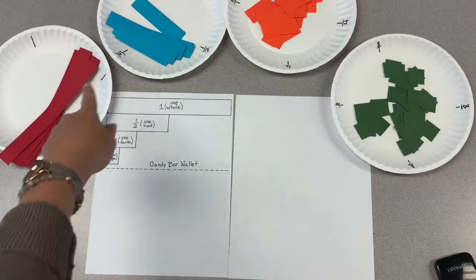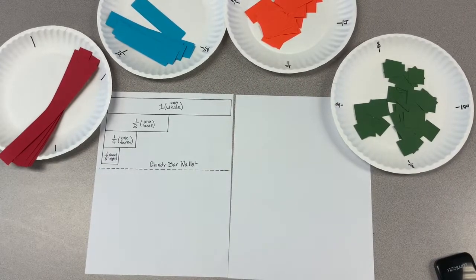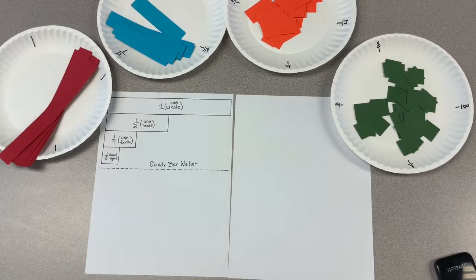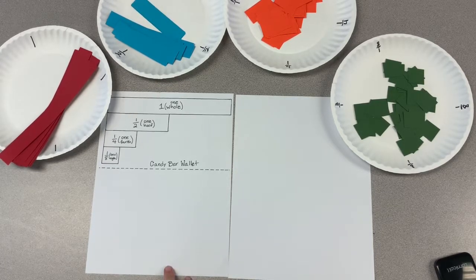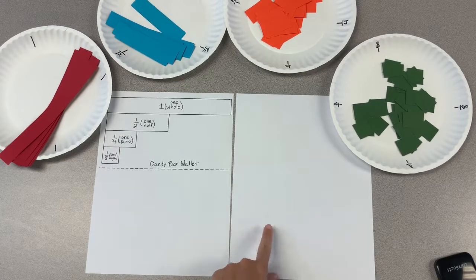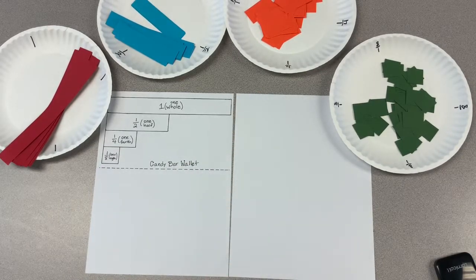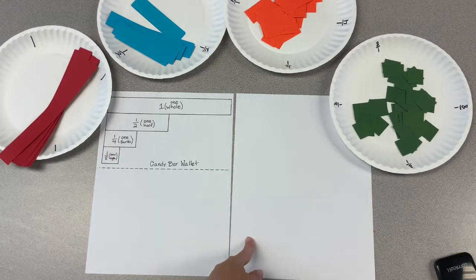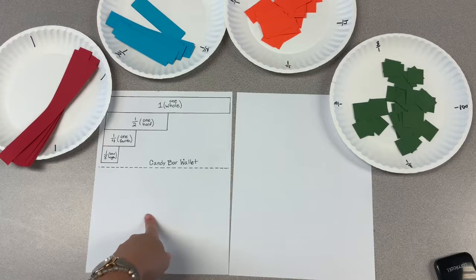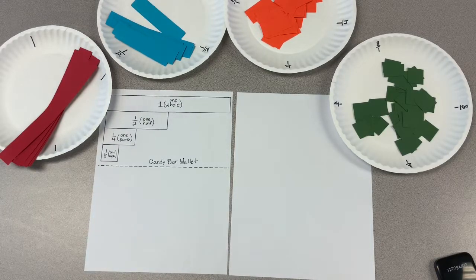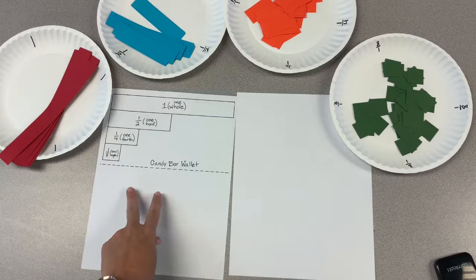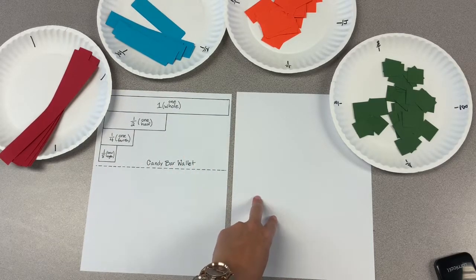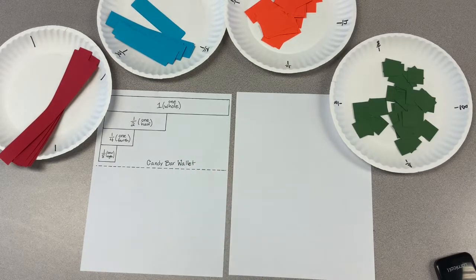To play the game, students need access to the four plates of fraction pieces, also known as candy bars, and they're also going to need their candy bar wallet. I'm going to keep track of the different rolls as we go, what equations we've been solving mathematically on this side while I show the visual model on this side.